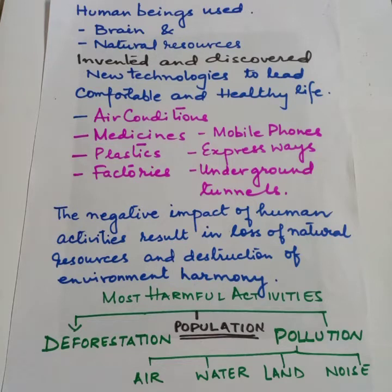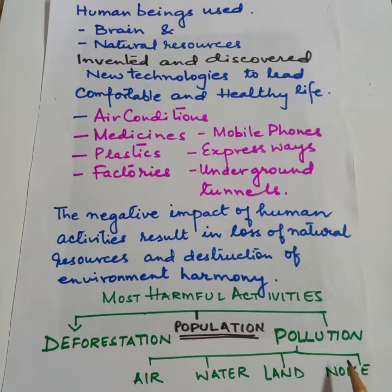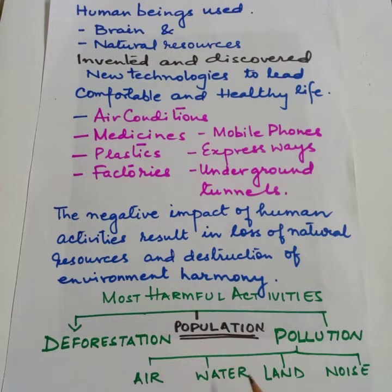The most harmful activities are deforestation and pollution, all because of increase in population. Pollution is of four types, which we have already studied in the previous video: air pollution, water pollution, land pollution, and noise pollution.